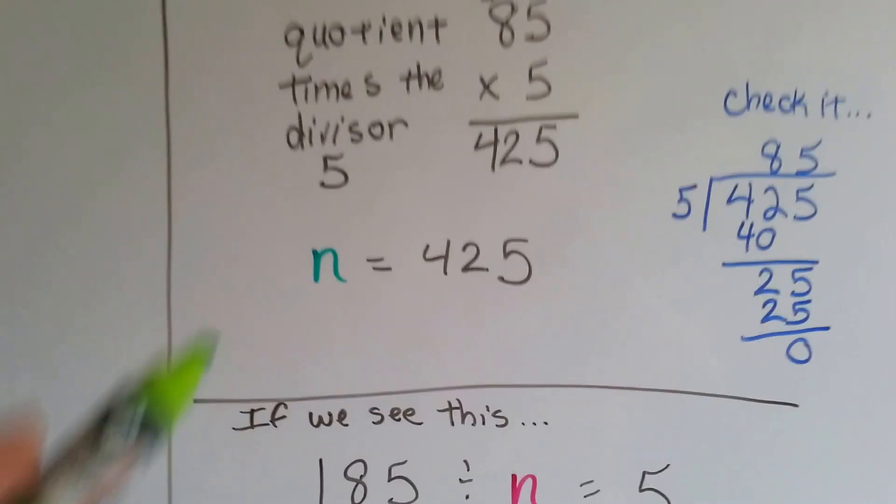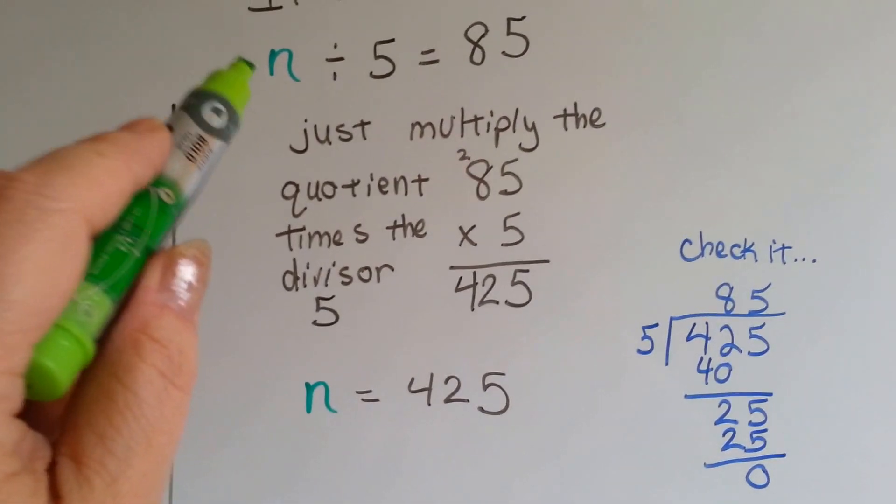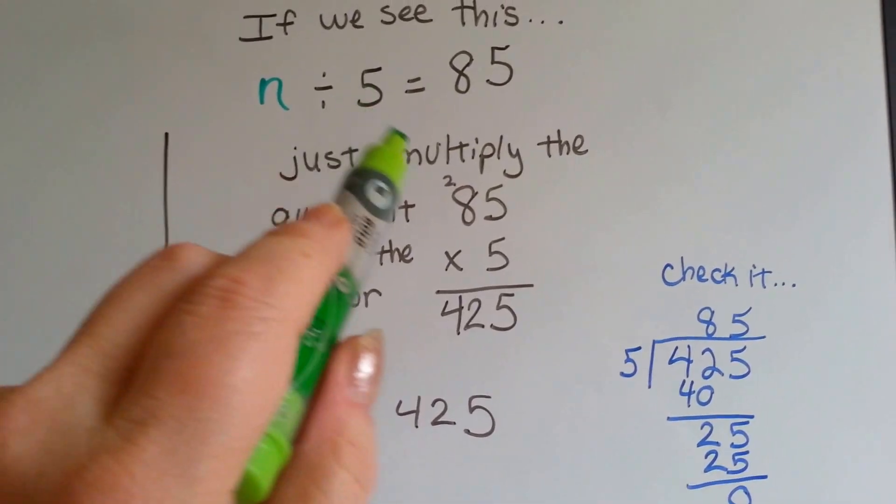What happens if we see this now? For this one, the dividend was missing and we had the divisor in the quotient.